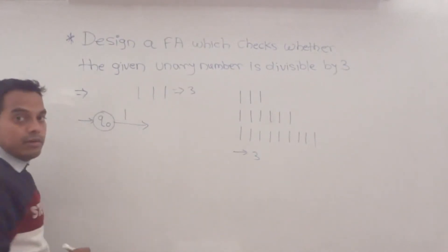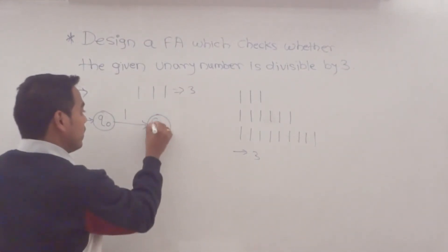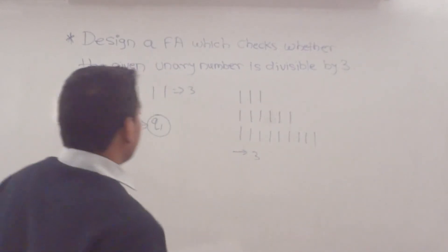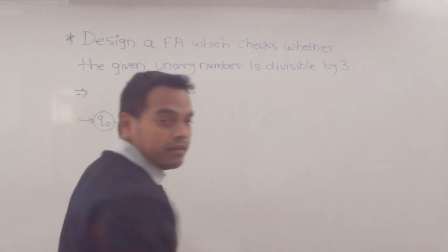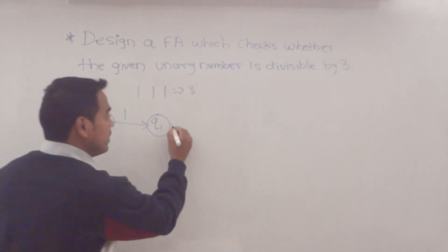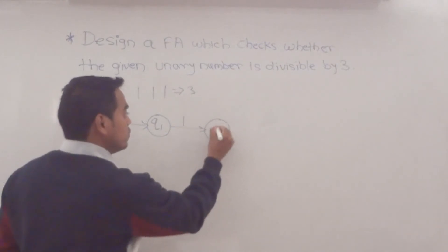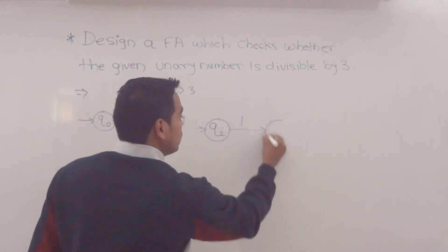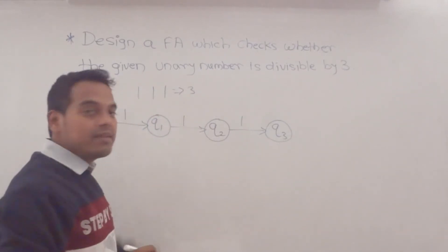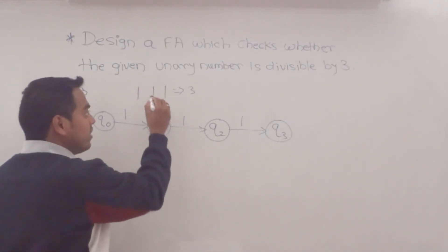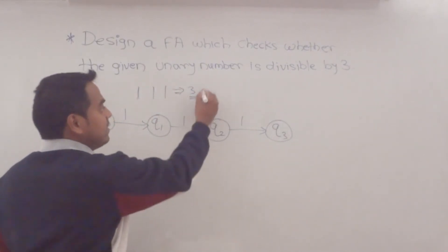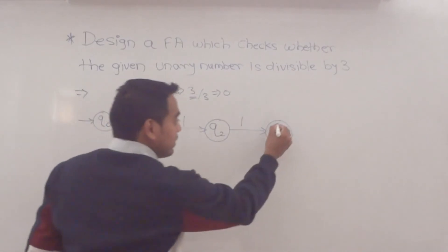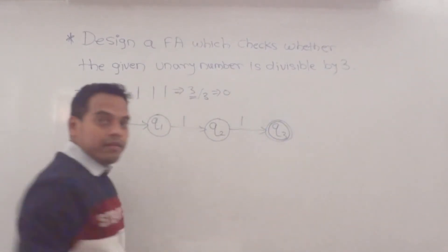The initial state is q0. At q0, suppose 1 comes — we go to state q1. At q1, suppose 1 comes — we go to q2. At q2, suppose 1 comes — we go to q3. So this is the minimum string accepted. Input 1, 1, 1 represents 3, and 3 is divisible by 3, so q3 is our final state.